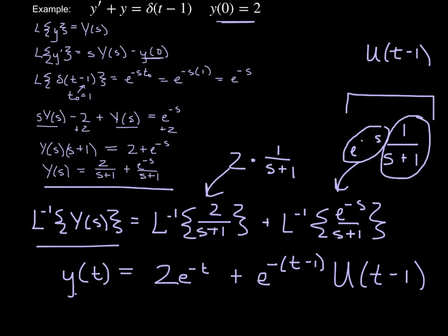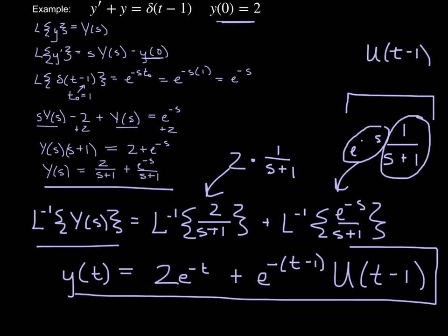We can graph this or write it in a different form, but we'll leave it as is. That's one example of how to solve a differential equation involving the Dirac delta function, or unit impulse.